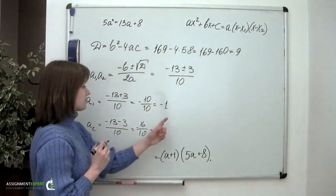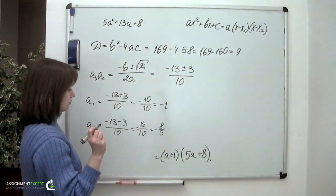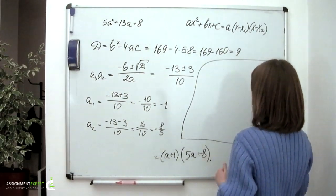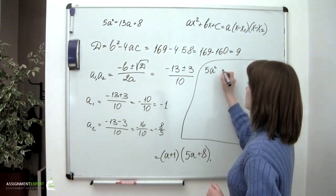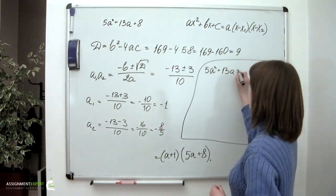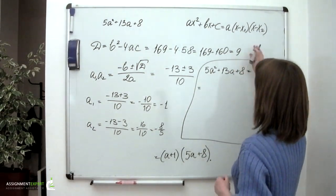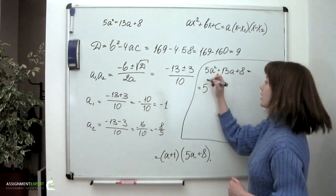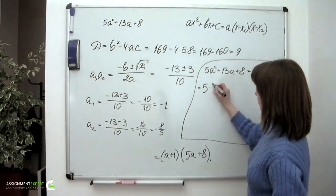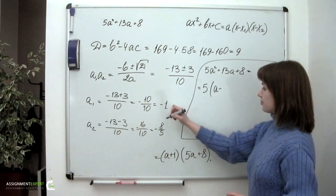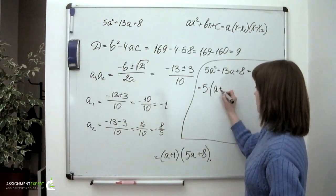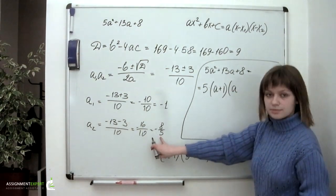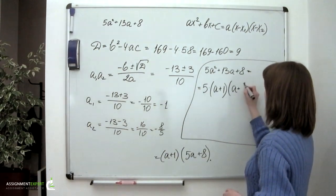Let's now substitute these values into the formula. So we'll have, again, 5 times squared a plus 13a plus 8. According to this formula right here, it might be factored as 5 which is the coefficient standing next to this squared a in our case, times a minus the first root which is negative 1 which means that we have a plus 1. And times a minus the second root which is negative 8 fifth which means that we have a plus 8 over 5.